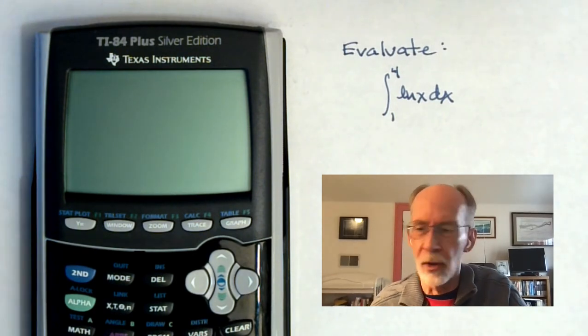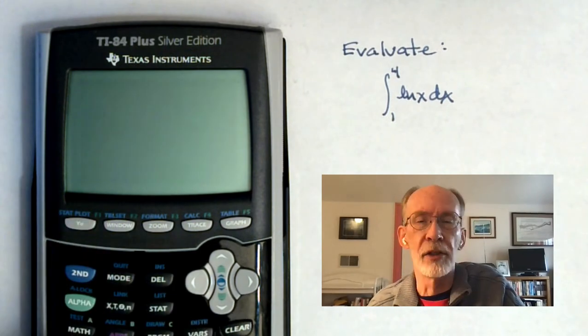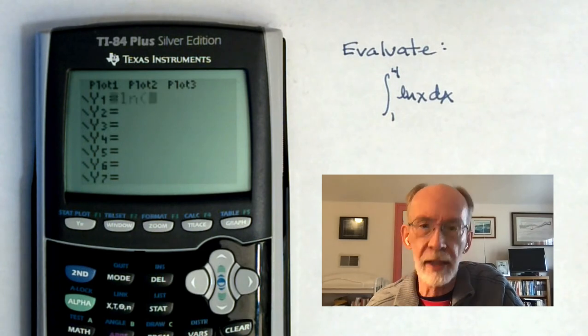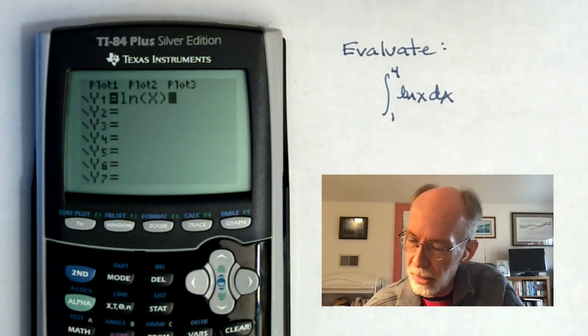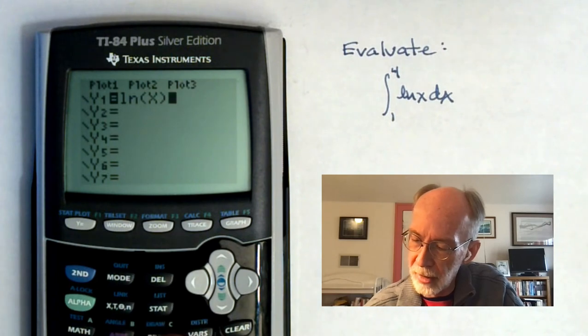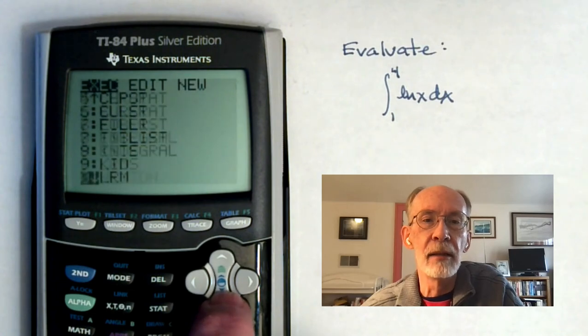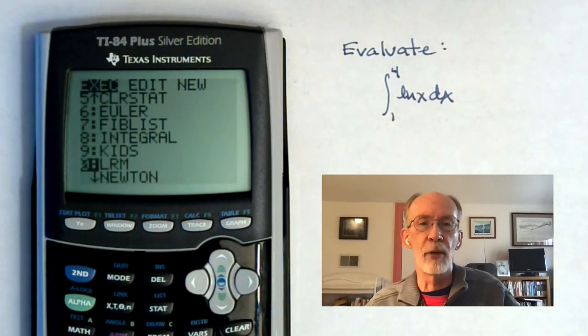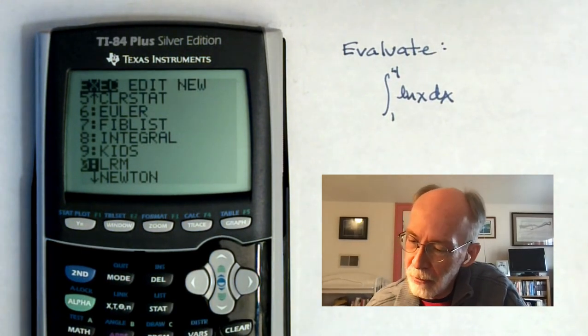So here's how these things tend to work. You need to enter the function, the integrand. And so, our function is the natural log of x. And then you need to run whatever program you're given. So, I'm going to hit the program button. And the one I'll be using is called LRM for left, right, middle. I suppose we'd call it LMR if we wanted to take things in order from left to right. So, I'll run that.